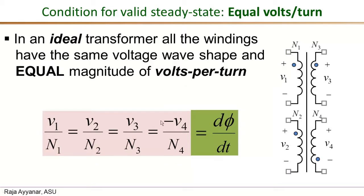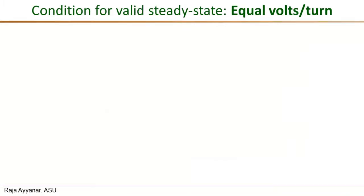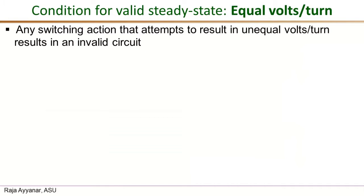This seems obvious by Faraday's law — every winding will have the same volts per turn. So why is this a requirement for steady state operation? When we design power converters and the controller and gate drive, we should not inadvertently arrive at a situation where the switching action results in different voltages on the different windings. Any switching action that attempts to produce unequal volts per turn makes the circuit invalid.